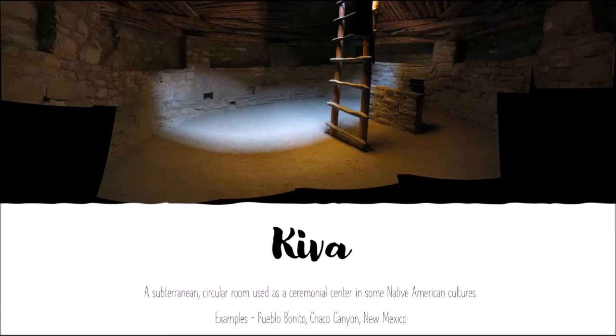Kiva is a subterranean circular room used as a ceremonial center in some Native American cultures. The example we have here is Pueblo Bonito in the Chaco Canyon, New Mexico region.